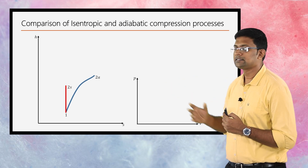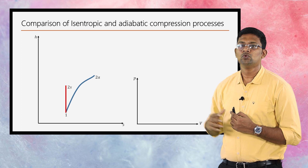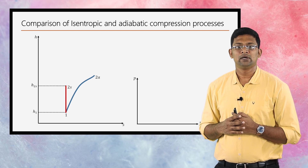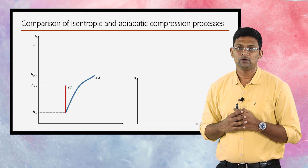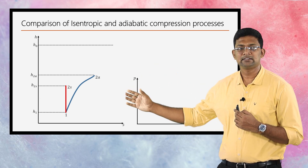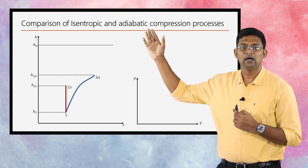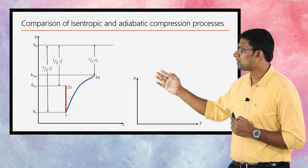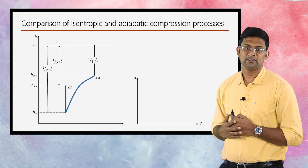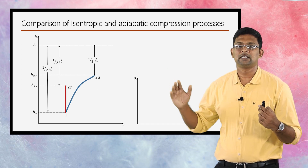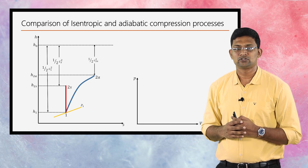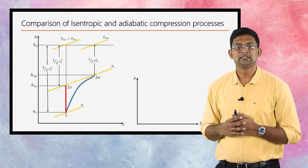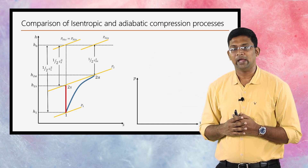Let us mark the corresponding enthalpies h₁, h₂s, h₂a, and also the stagnation enthalpy h₀. We are relating the static enthalpies h₁, h₂s, and h₂a with the stagnation enthalpy h₀, as we have seen for the expansion processes. Finally, we can draw the constant pressure lines on the Mollier diagram: p₁ corresponding to state point 1, p₂ corresponding to the end points, and the stagnation pressures p₀₁ and p₀₂s along with the p₀₂a line.